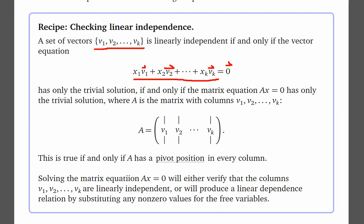If the only possible solution to that equation is the trivial solution, then they are linearly independent. The trivial solution is where all of the xᵢ's — all of the scalars — are equal to zero. It makes sense: setting every scalar to zero just crushes all the vectors down into zeros, giving a bunch of zero vectors added together, which is of course the zero vector. If the only solution possible is the trivial solution, then the set of vectors is linearly independent.